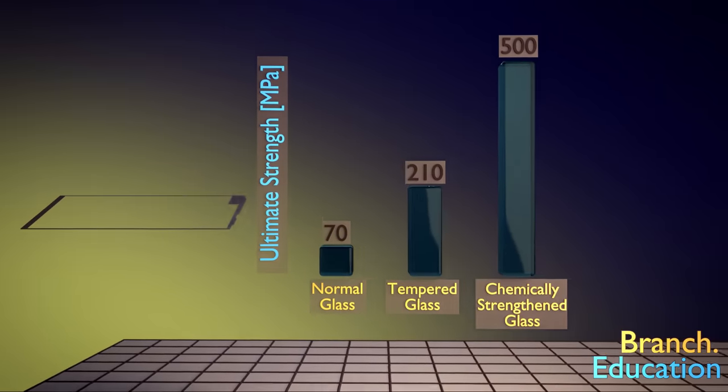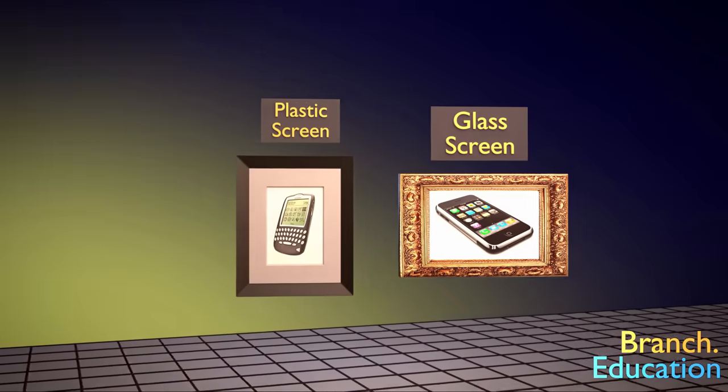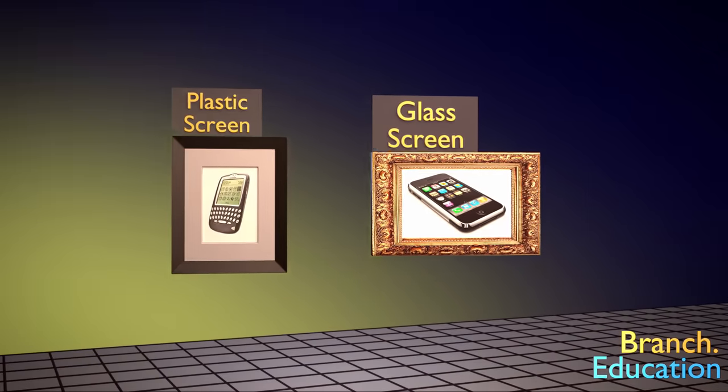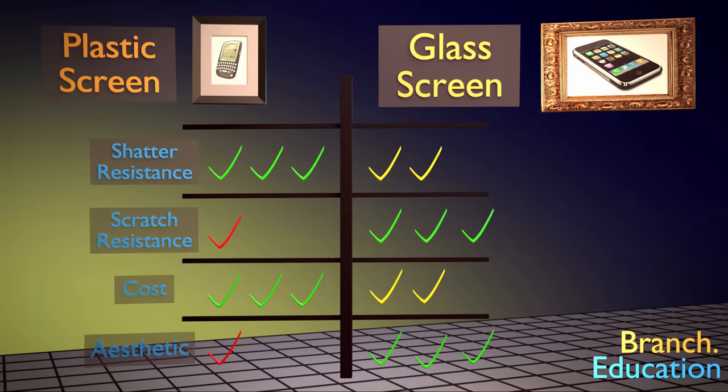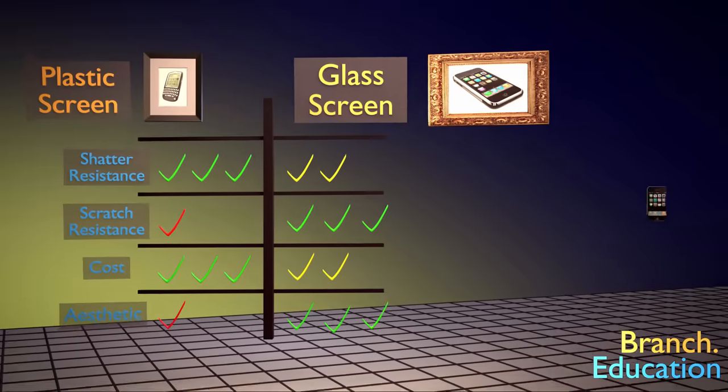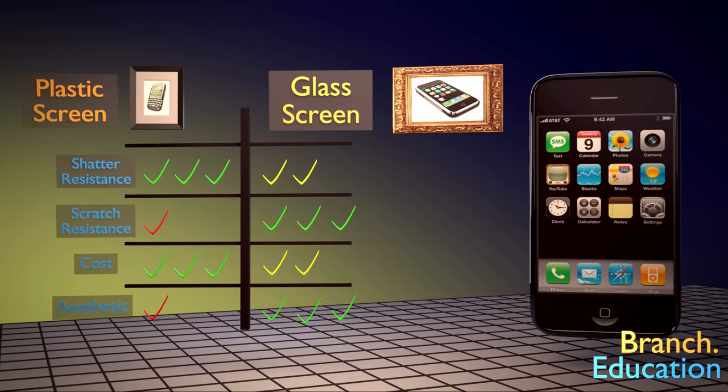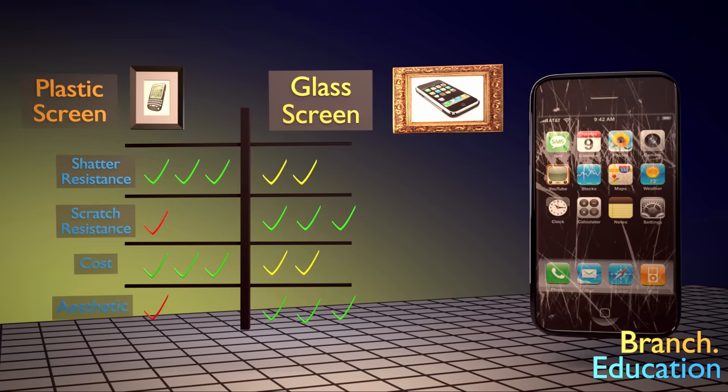Before the first iPhone showed up in 2007, the standard for cell phone screens was plastic. And although plastic doesn't shatter, it is very easily scratched. If the screen were covered in plastic, it wouldn't last a week sitting in your pocket next to your keys before having dozens of scratches all over it.